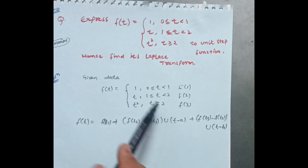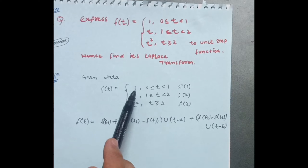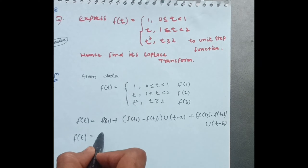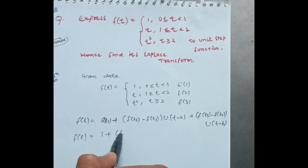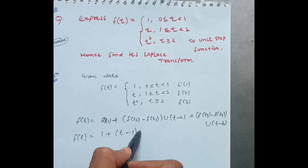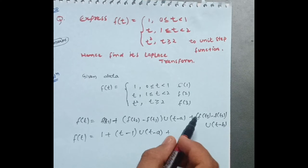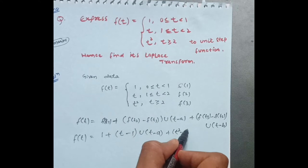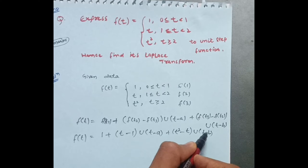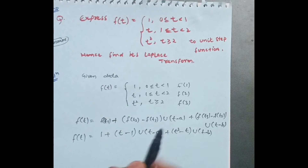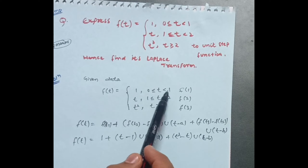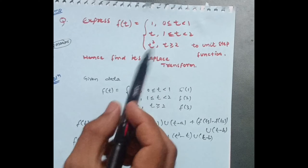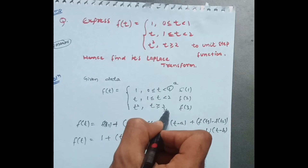Now substitute the given values. f1=1, f2=t, f3=t². Plugging into the formula: f(t) = 1 + (t − 1)·u(t−a) + (t² − t)·u(t−b). From the question, the first interval ends at 1 and the second interval ends at 2, so a=1 and b=2.